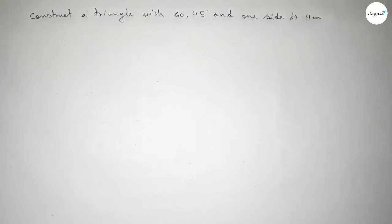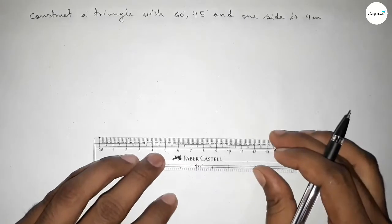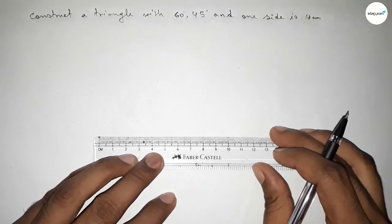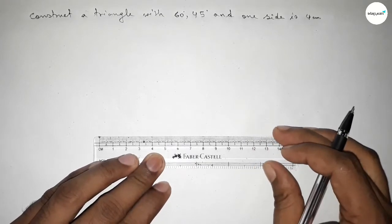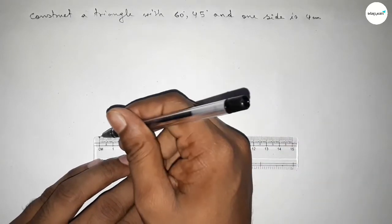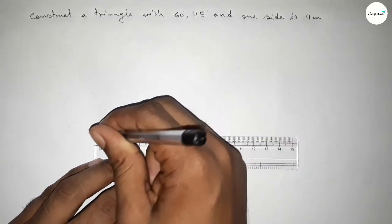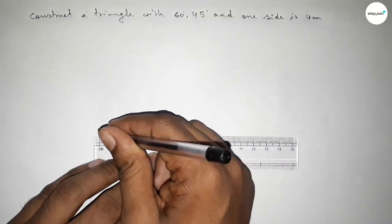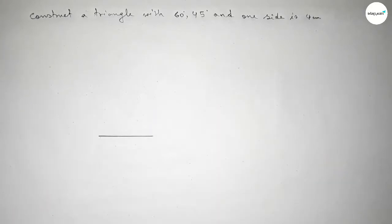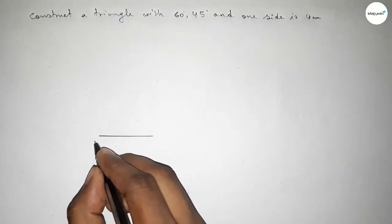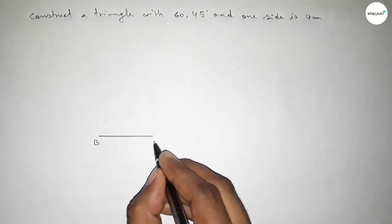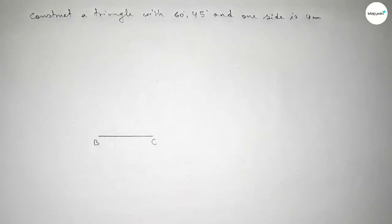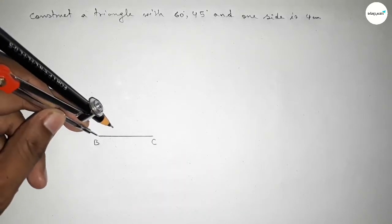First of all, we have to draw a line of length 4 centimeters. This is the 4 centimeter line, taking point B on one end and point C on the other. First we have to draw a 60 degree angle at point B.